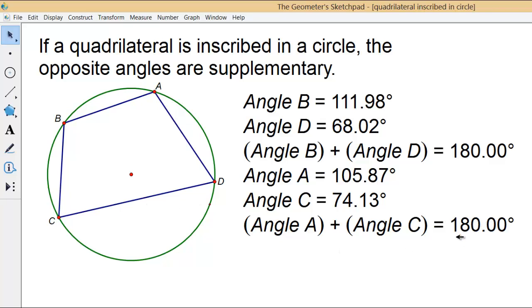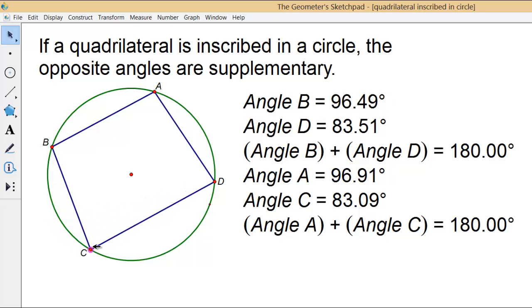In other words, their angle measures add up to 180 degrees. We can move this point around, and as long as the vertices of the quadrilateral remain on the circle, the opposite angles will always add up to 180 degrees.